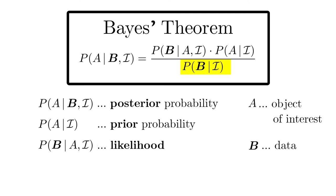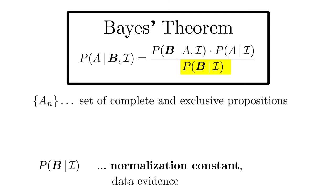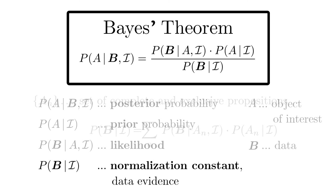We finally arrive at the term in the denominator of Bayes' theorem. It guarantees the normalization of the posterior and is called normalization constant. In a deeper sense, it is the data evidence. Let's assume A is part of a set of complete and exclusive propositions. Do you still know what that means? Then the denominator has a simple form. In the following, we omit the background information I.